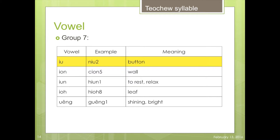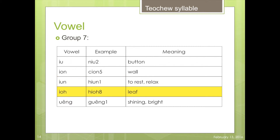Now let's go on to vowel group 7. For example, 'new' meaning the button. For example, 'chair' is meaning the word. For example, 'heel' is meaning to rest or relax. For example, 'here' is meaning the beat. One example, 'cân' is meaning signing or price.